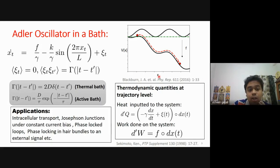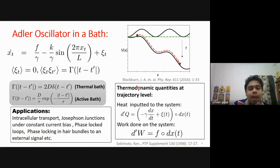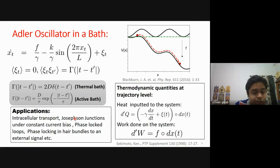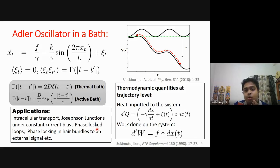This model has a wide variety of applications. It is the simplest model for Brownian motors, which are key for intracellular transport. In biology, it is used to study phase locking in hair cells, where the cells amplify incoming signals in the ear. From an electronic perspective, circuit elements called Josephson junctions under constant bias are also modeled this way, and it is used for applications of phase-locked loops.